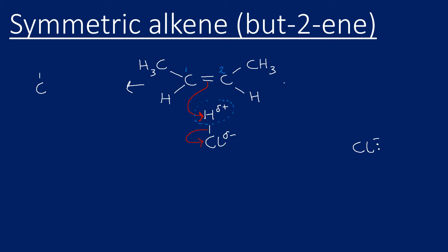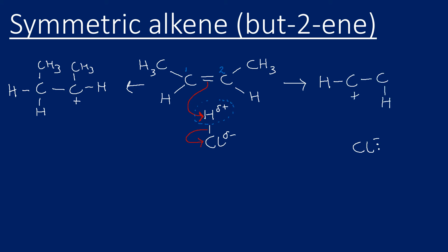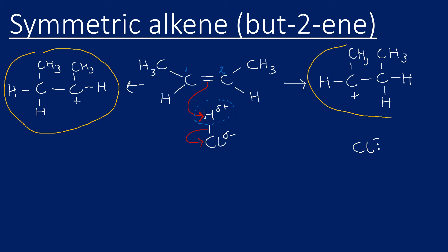If the hydrogen bonds to the left carbon, that leaves the right carbon as a carbocation. If the hydrogen bonds to the right carbon, that leaves the left carbon as a carbocation. Those are the two possible carbocations — there are always two possible carbocations. However, because this alkene was symmetrical, both carbocations are actually exactly the same.